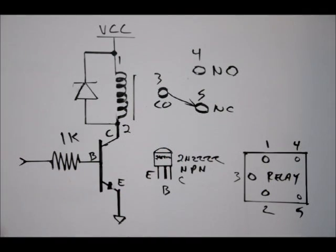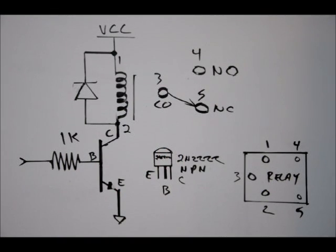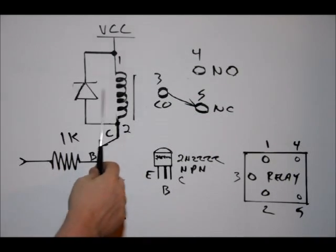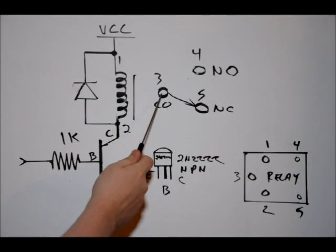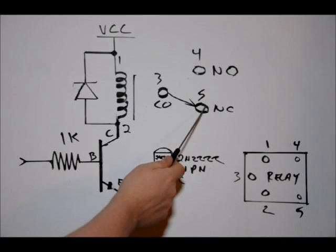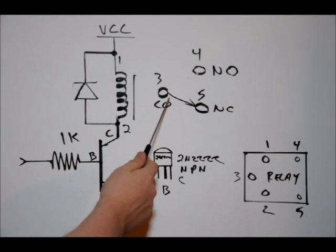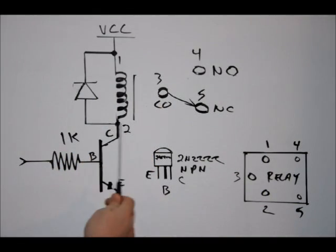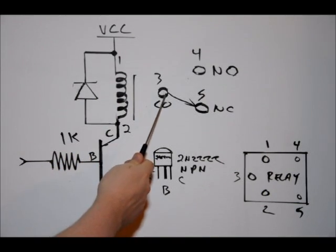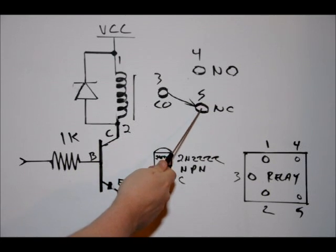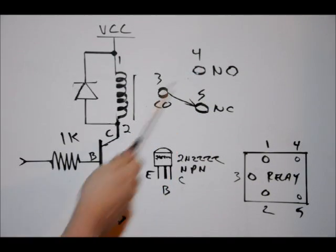And that controls three internal pins. When the circuit is off, when the magnetic field is not there, the common pin, CO, is connected to the NC pin, normally closed. And when the relay becomes energized, this electromagnet basically causes the common pin to switch from the normally closed pin to the normally open pin.